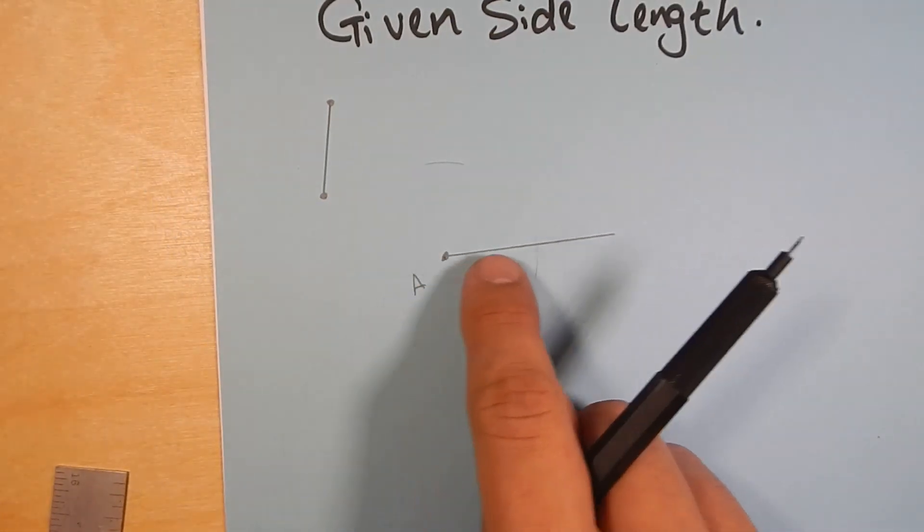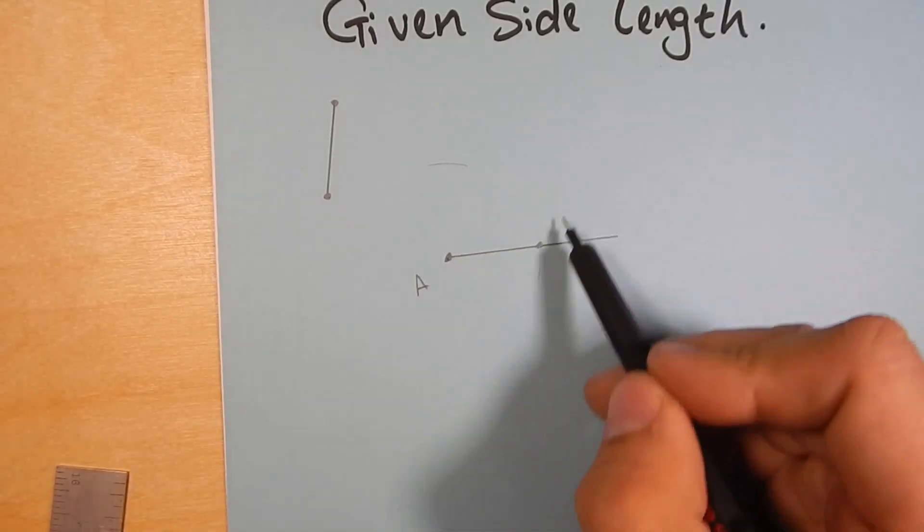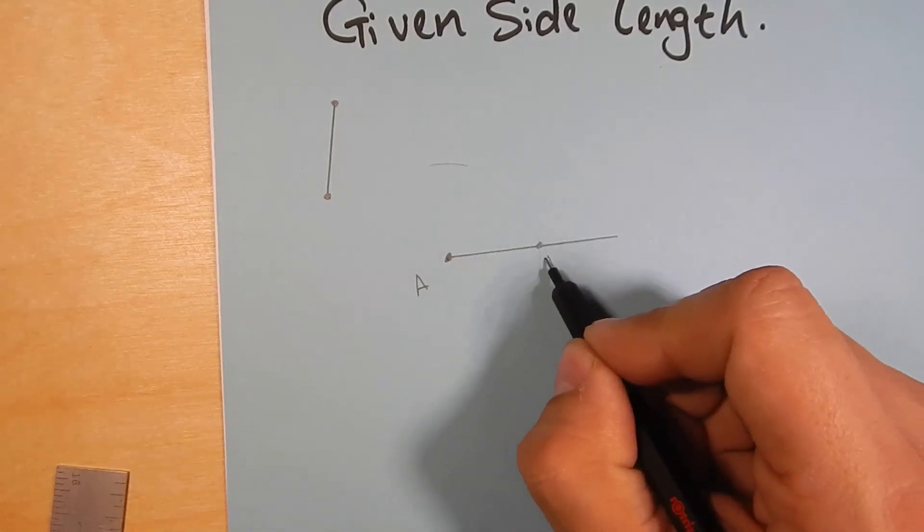So now we have segment A here where this intersects. Let's see, I want to name this, I'm going to probably call this A, B, C, D. So I'm going to call this point D.